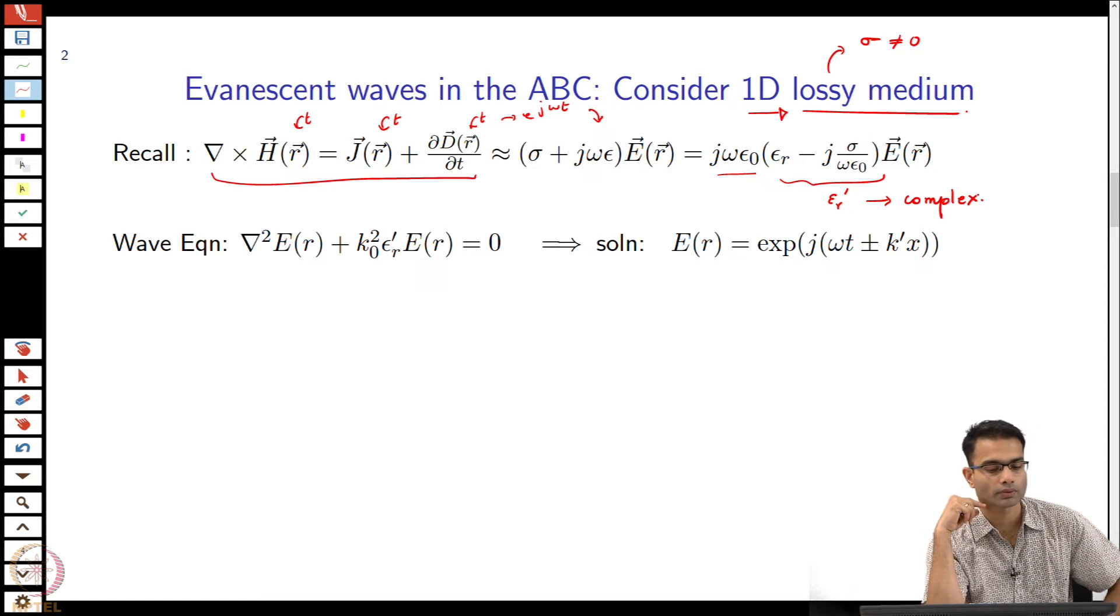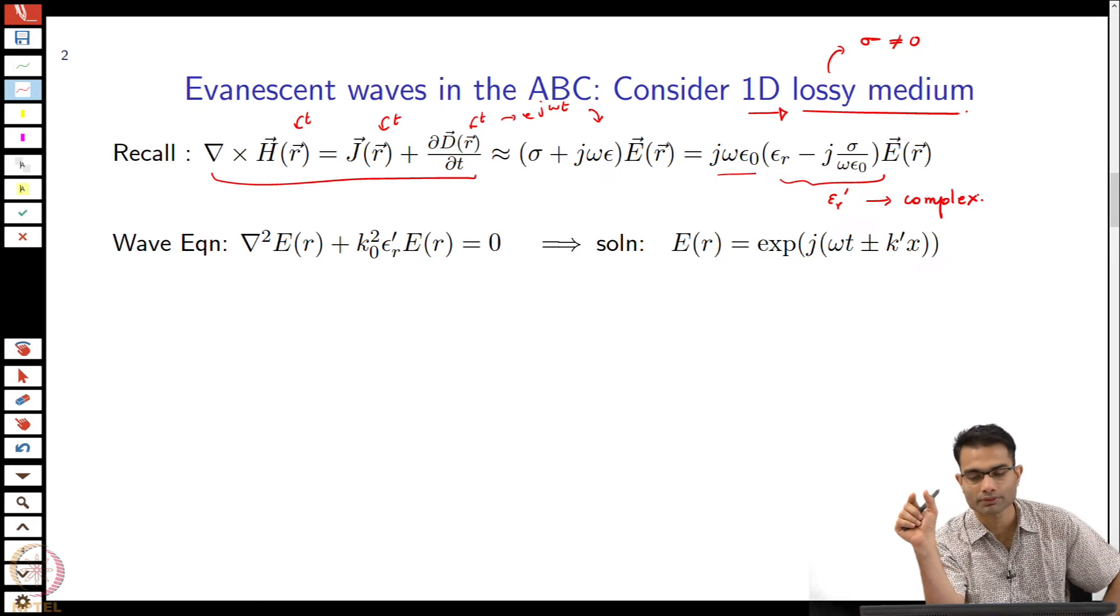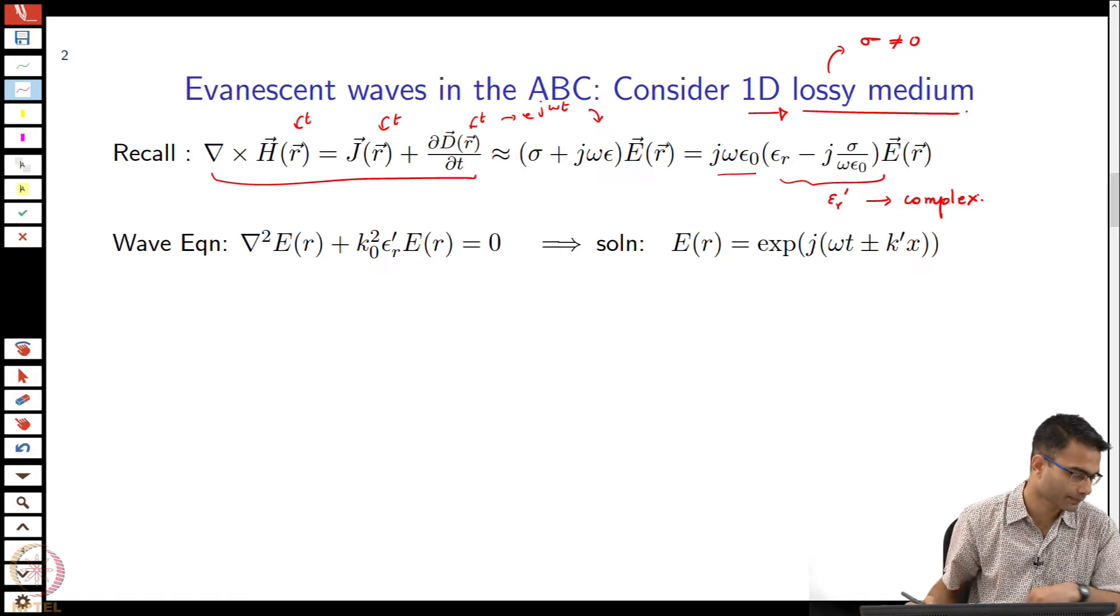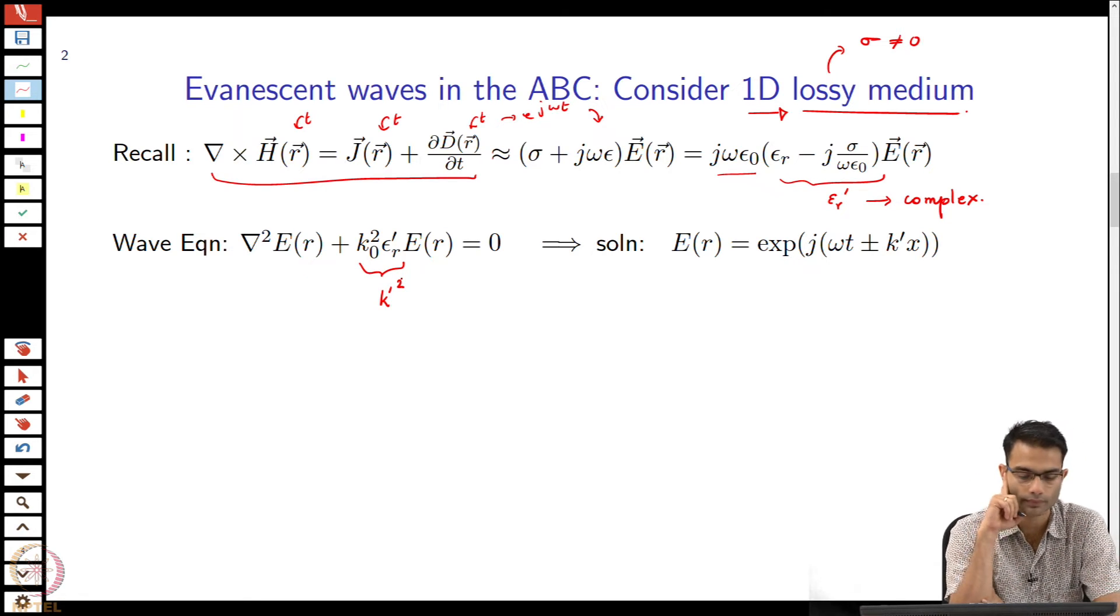This is just like our original Maxwell's equation where supposing I put sigma equal to 0 I get epsilon is epsilon naught times epsilon r, relative permittivity. Then what do I do? 1D medium. Very simply I will take the two Maxwell's equations, take curl of the other and get a wave equation. We have derived wave equation many times so we won't derive it once again over here.